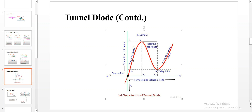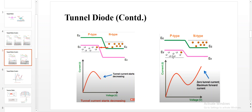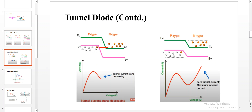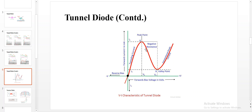In the VI characteristics graph, tunneling current slowly increases with voltage, reaches a peak point, and then further increasing the voltage causes misalignment in overlapping so current slowly goes down. This region is called the negative resistance region. It is called negative resistance because though the voltage is increased, due to misalignment of the valence band and conduction band, only a few electrons transfer from N side to P side, so the current reduces.